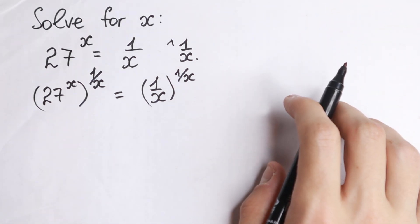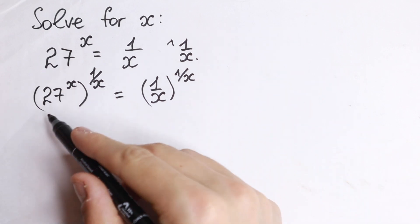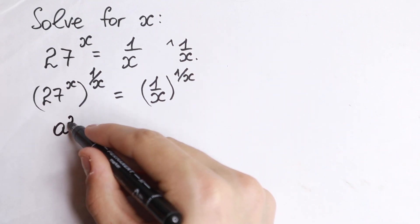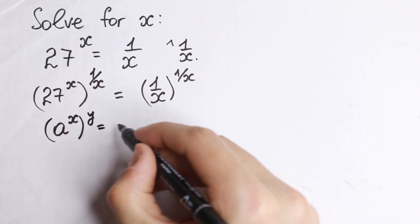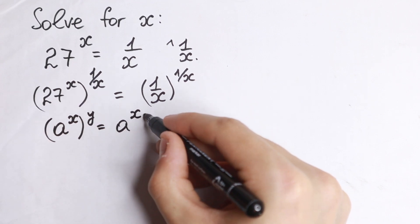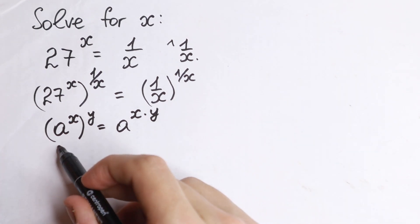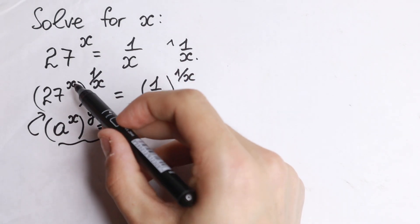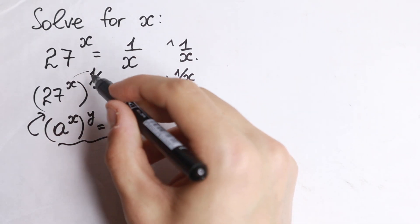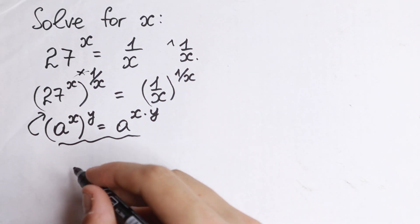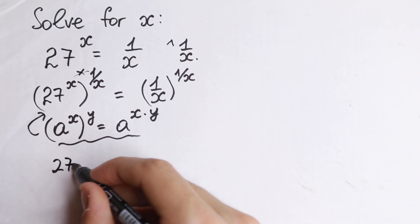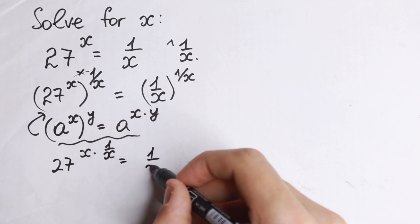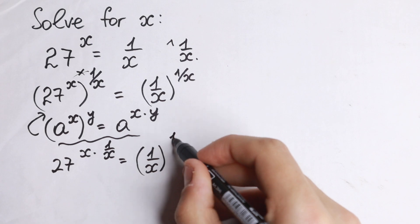But why is this trick really good in our case? Because take a look closely at the left-hand side. We have a situation like a to the power x, raised to the power y, which equals a to the power x times y. That's the rule we need here on the left-hand side, because we need to multiply our powers. So 27 to the power x times 1 over x equals 1 over x to the power 1 over x.